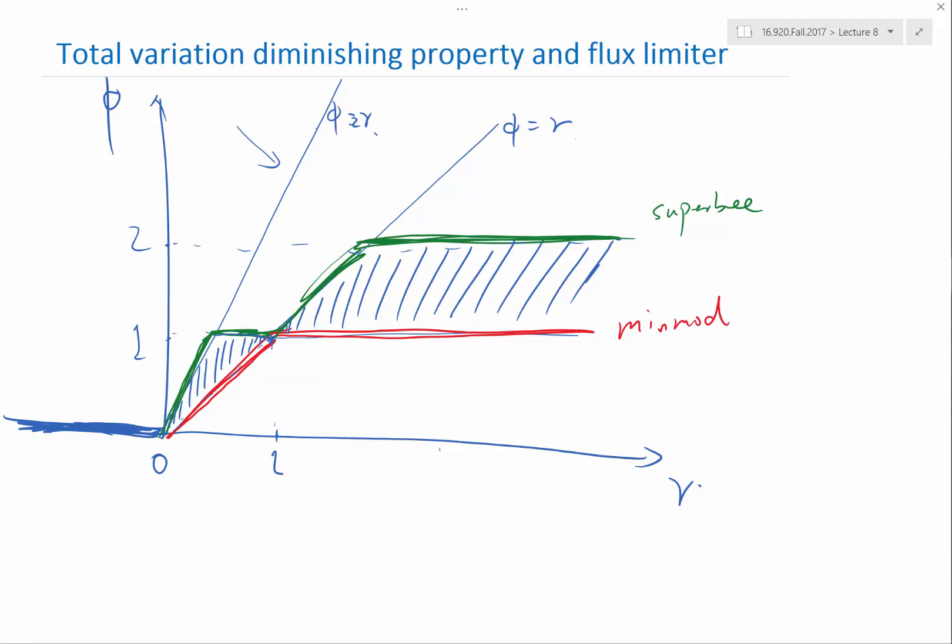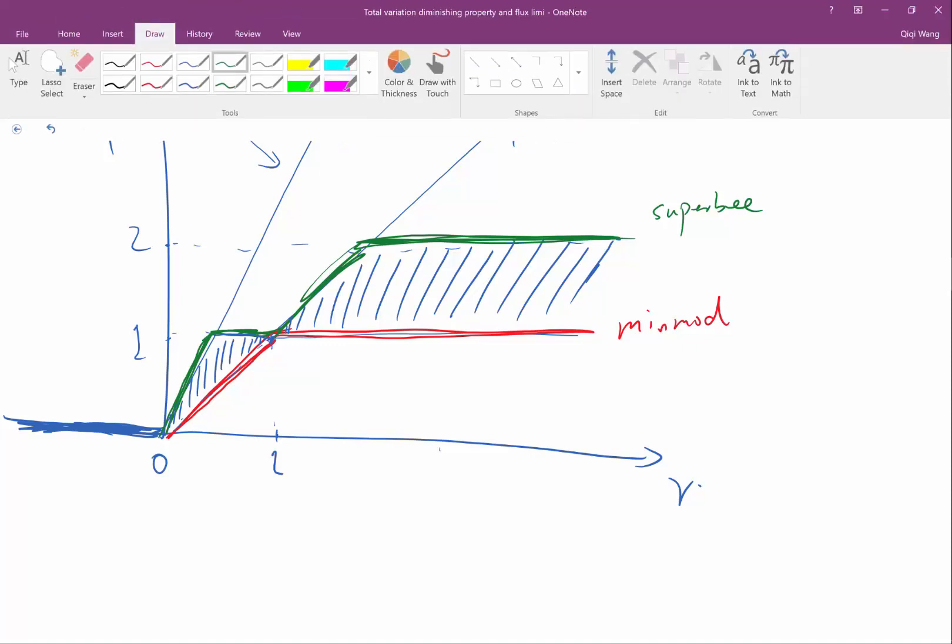While the mean mod limiter is trying to construct as low slope as possible. So the mean mod would be second order, but qualitatively looks the most like a purely first order scheme, while the super B limiter would still be non-oscillatory, still be TVD, but the solution looks most like a central flux as possible. And there are also compromises between them.